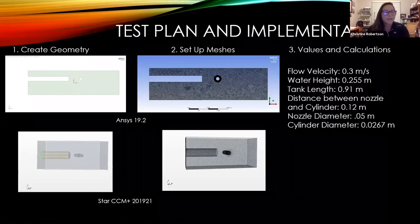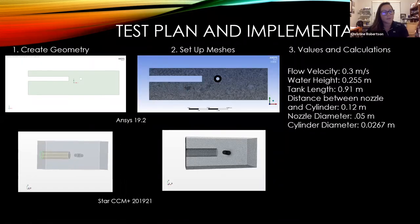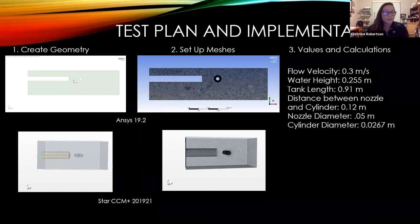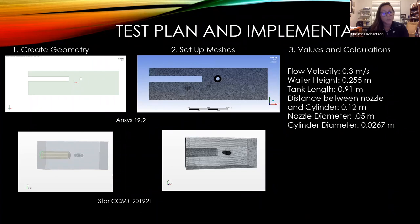Our modeling and simulation team used CFD software to model the system in ANSYS and STAR-CCM. The first two pictures on the left-hand side depict the initial geometry of the system with the nozzle and cylinder in place for each respective software. The second set of pictures shows the meshes used for each. For consistency between both models, the same values and calculations were used in creating both simulations, and these can be seen on the far right of the slide.